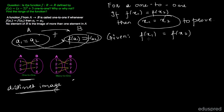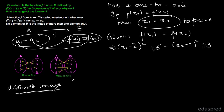If we change the input to x1, then this x value changes to x1, which gives us (x1 minus 2) whole square plus 3. And if we substitute x with x2, that gives us (x2 minus 2) whole square plus 3. Now the 3 and 3 cancel, which gives us (x1 minus 2) whole square is equal to (x2 minus 2) whole square.